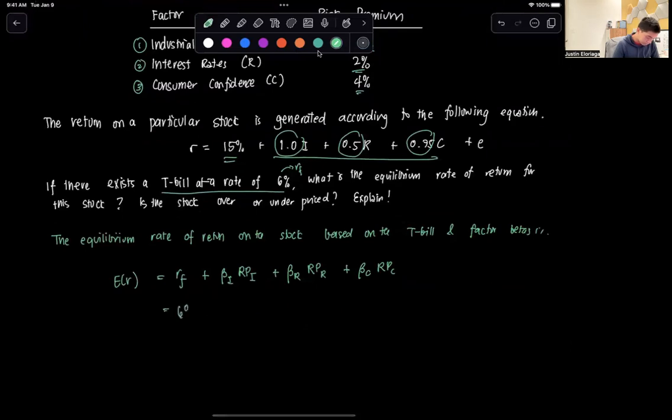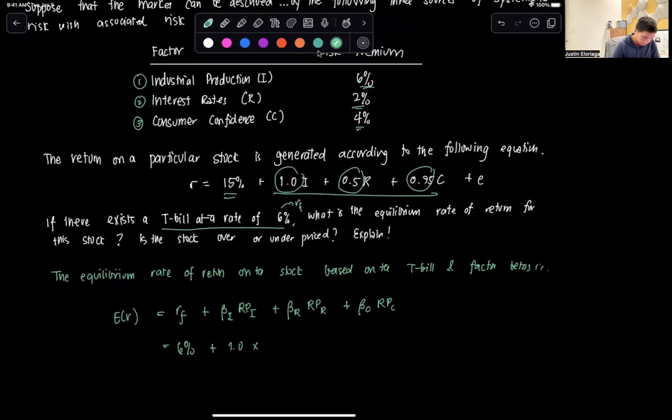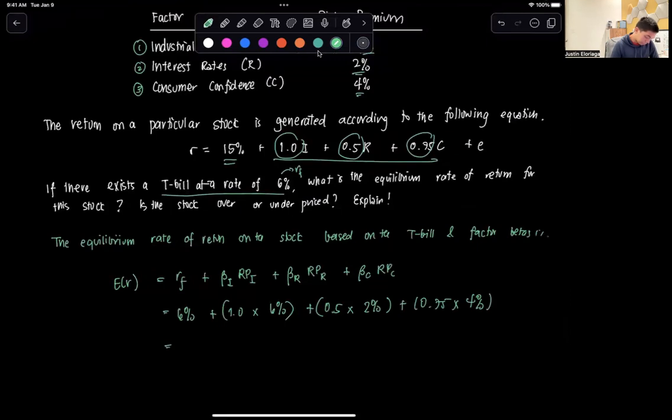So the rf is six percent, that's the T-bill rate, plus beta i is 1.0 times the risk premium of industrial production which is six percent, plus beta r is 0.5 times the rpr which is two percent, plus beta c is 0.75 times the risk premium of four percent. And if we calculate this one, this will be basically 16 percent.